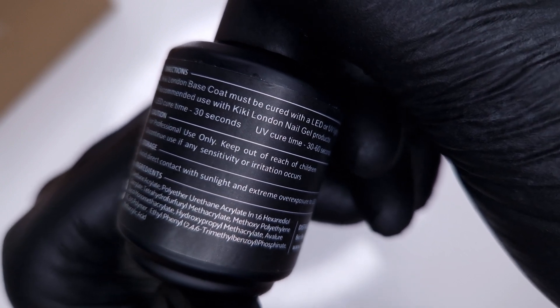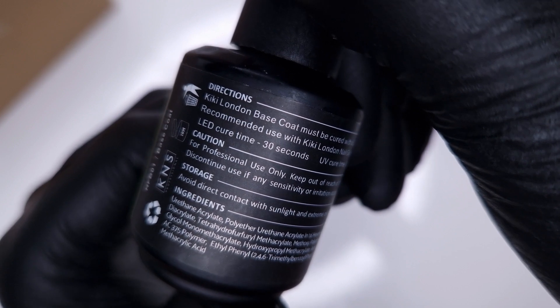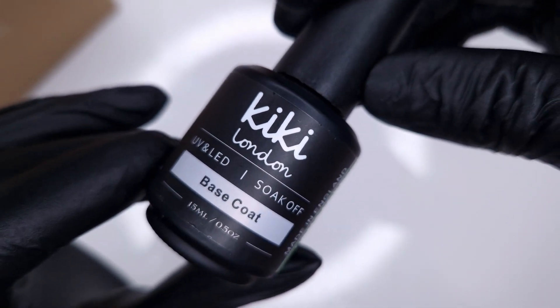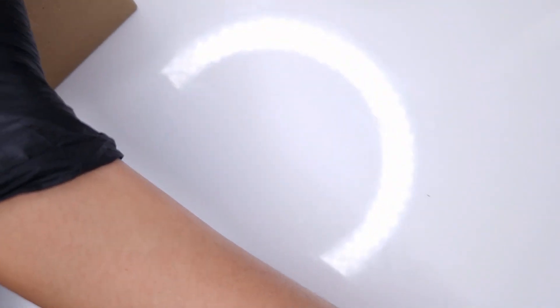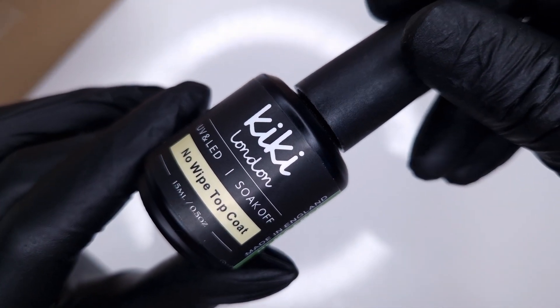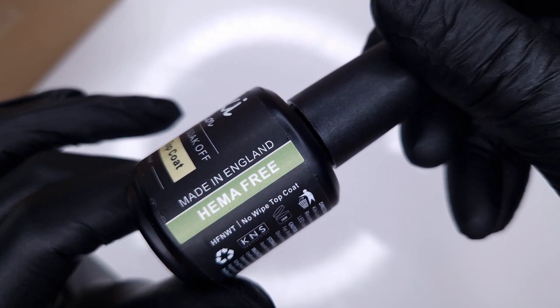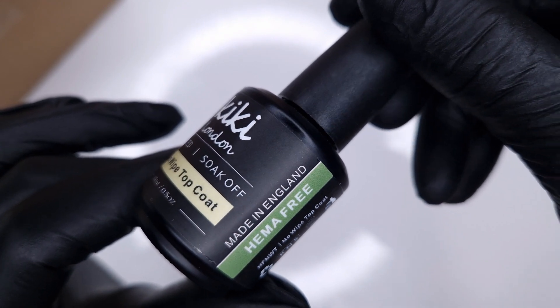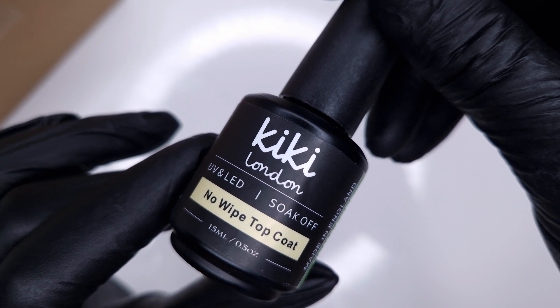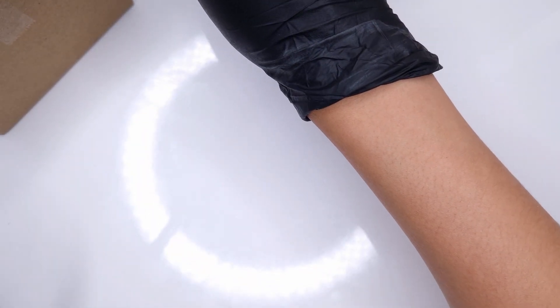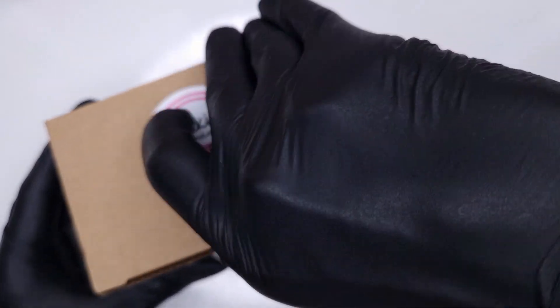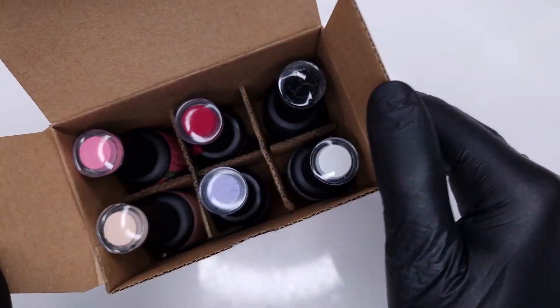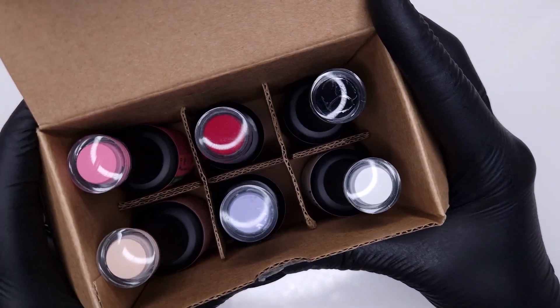On the back of the bottles, very similar again to the bottles that you're familiar with, has all of the ingredients and the instructions on how to use it and basically a lot of that important information. All of the Hema Free range is 15ml bottles so they are your larger salon size bottles. Then here we also have the Hema Free no wipe top coat, very similar to the no wipe top coat that you know and love but in a Hema Free formula.